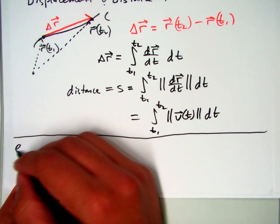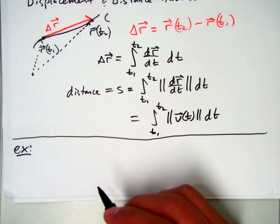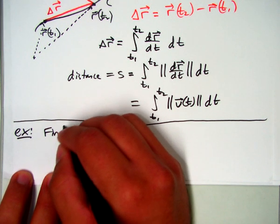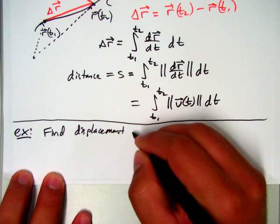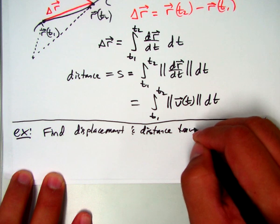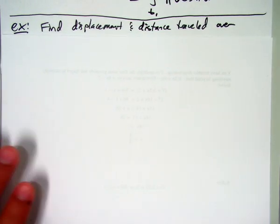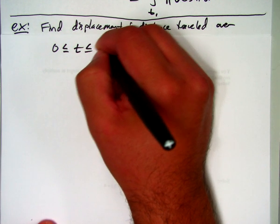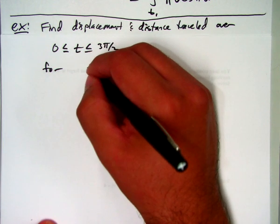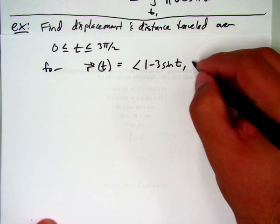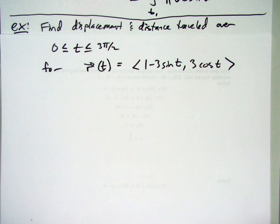So the final example we'll end with looks something like this. Let's say we want to find the displacement and the distance traveled over the interval 0 to 3π/2 for the position function r(t) equals <1 - 3sin(t), 3cos(t)>.